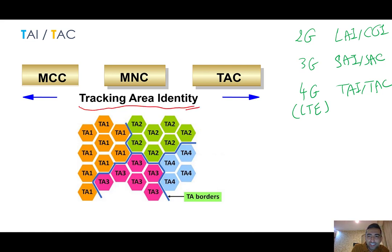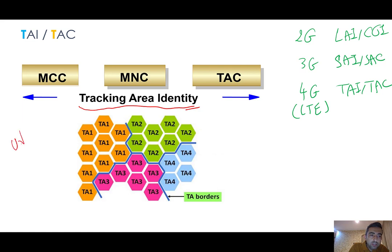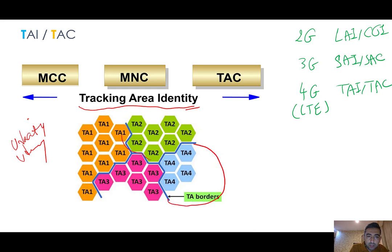what is TAI? The answer is shown in the slide: it is Tracking Area Identity. One idea that came to my mind — maybe in the next lessons I'll give you some questions and ask you to send me the answers by email, as an evaluation exercise. I may also start cooperation with Udacity or Udemy in the future. As you can see here, for 4G we have MCC, MNC, and TAC. For example, this is a TAI — all cells are in TA2, which means Tracking Area 2, but with different TAC values.